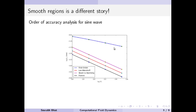In the case of the second order method, the slope is equal to 2, which is what is expected from a second order method. We can easily see that the error quickly drops for any given mesh with a higher order method compared to a lower order method.